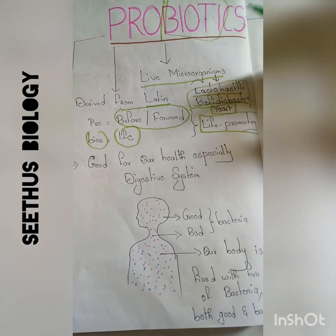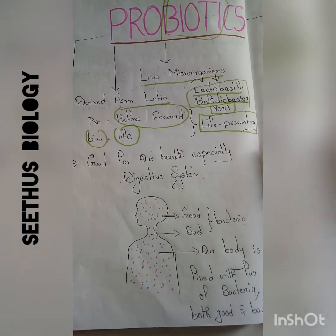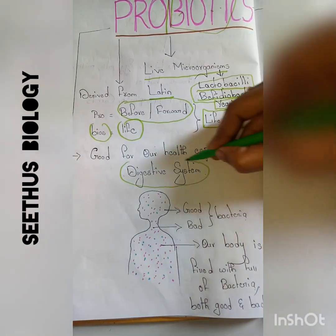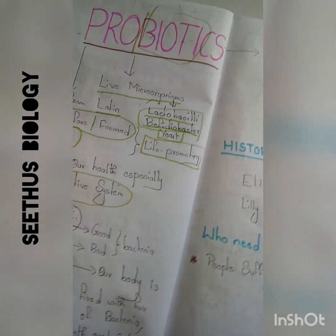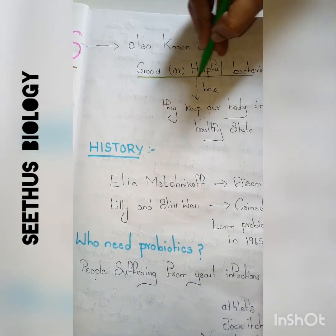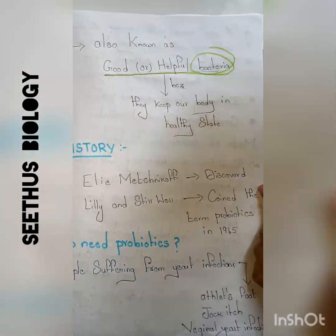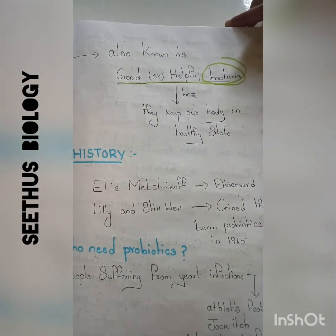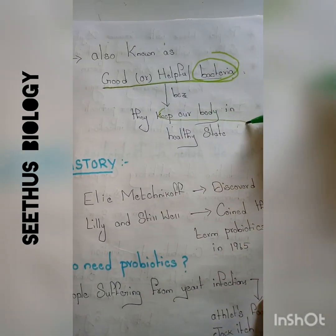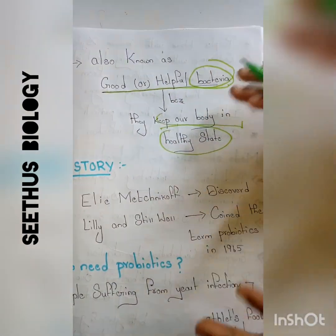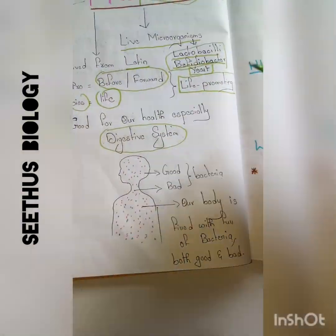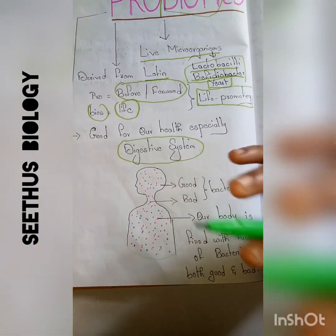Probiotics are used for our health. To stay healthy, we can consume probiotic-rich foods or take them as pills or in powder form. These probiotics are especially useful for our digestive system to function properly. They are also known as good or helpful bacteria because they keep our body in a healthy state without causing any infection or disease.